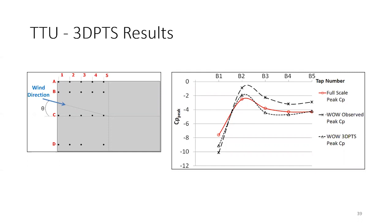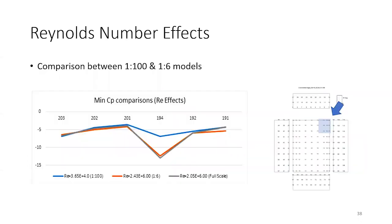On slide 38, the Reynolds number for the 1:6 scale appears slightly higher than full scale — was this achieved by using higher wind speed in the tunnel than at full scale? Yes, that should be the reason. We tested at different wind speeds, and the 1:6 scale test was run at 100% wind speed in the wind tunnel, which can yield a Reynolds number slightly exceeding full scale.